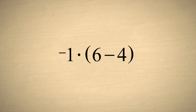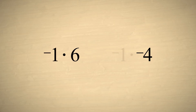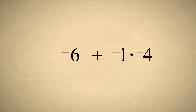But instead, let's say that we use the distributive property and multiply negative 1 times each number in the parentheses separately. We then have negative 1 times 6 plus negative 1 times negative 4. We know that negative 1 times 6 is negative 6, but we don't know what sign the product should be when we multiply two negative numbers. Is negative 1 times negative 4 equal to negative 4 or positive 4?